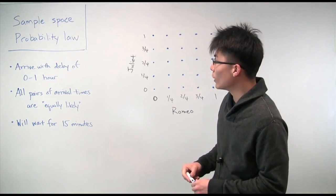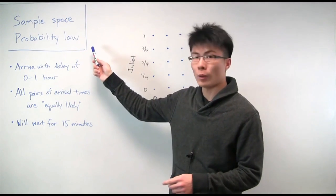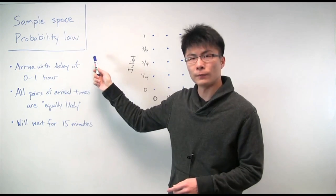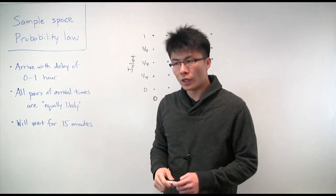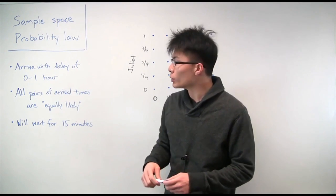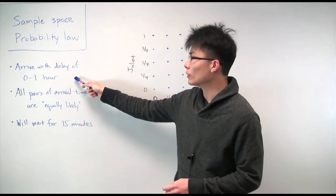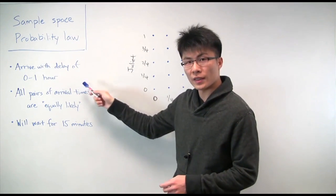To solve this problem, let's first try to set up a sample space and come up with a probability law to describe this scenario. Let's actually start with a simpler version of this problem. Instead of assuming that they can arrive at any delay between 0 and 1 hour, let's pretend instead that